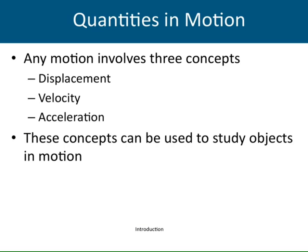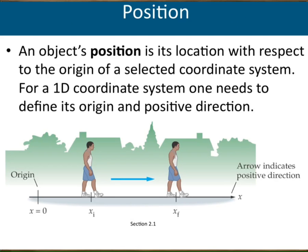Motion in one dimension takes place only in one axis, which we usually call X. Before defining the physical quantities, let me say something very important in physics: without starting to analyze anything, first you have to set up your coordinate system.